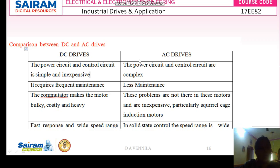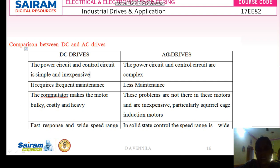Now here is the comparison between DC drives and AC drives. In DC drives, the power circuit and control circuit are simple and inexpensive. The power circuit designed for DC drives is very simple and the cost is very less. But in the case of AC drives, the power circuit and control circuit are very complex and it is also costly.